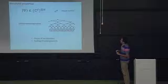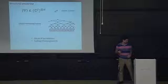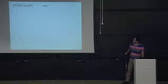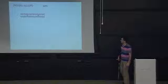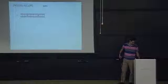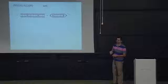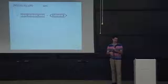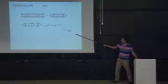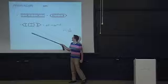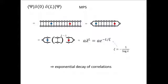We'll compare MERA with the matrix product state. In the MPS, a two-point correlator can be written as a transfer matrix raised to a power proportional to the distance between insertions. The dominant eigenvalue lambda to the L-th power gives exponential decay. We want to see what happens in MERA — and the conclusion will be power-law decay of correlations instead.